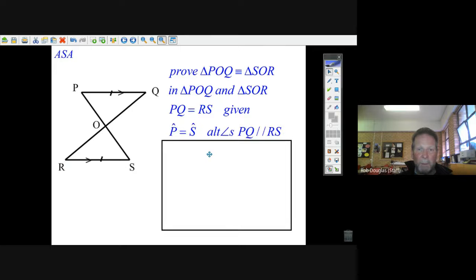QPR or OPQ, but since there's only one letter here at the point, we can say angle P is equal to angle S. And what's the reason? Well, P and S are called alternate